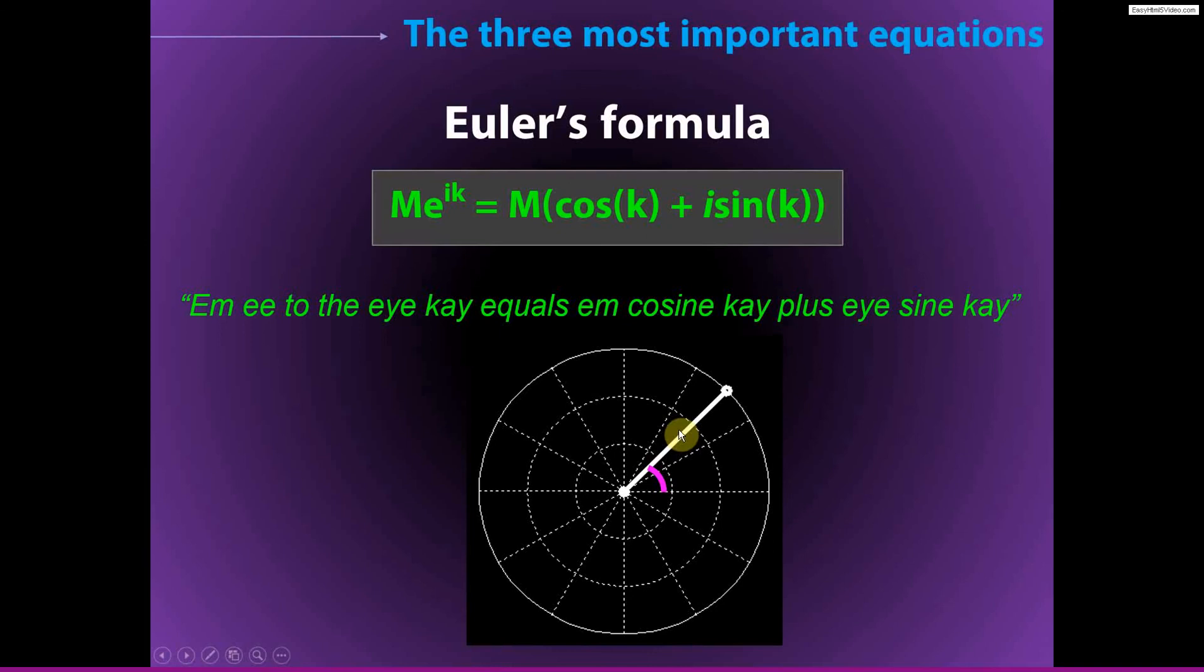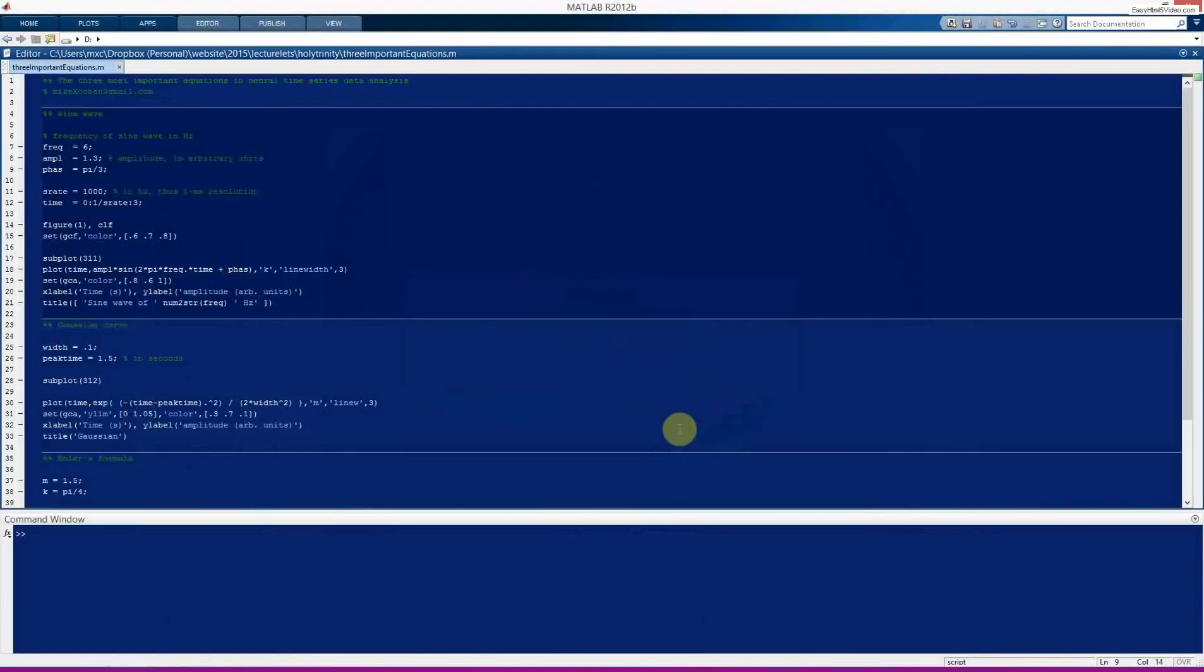Here we're going to create a sine wave. We define frequency and amplitude and phase. Here we define the sampling rate, which is 1,000, so this is in hertz. And here we define our vector of time, which is going to go from 0 to 3 seconds in steps of 1 over the sampling rate. So in this case, this is 1 millisecond.